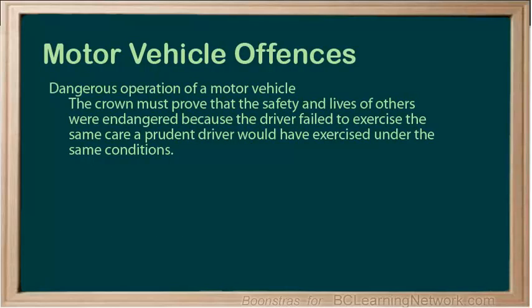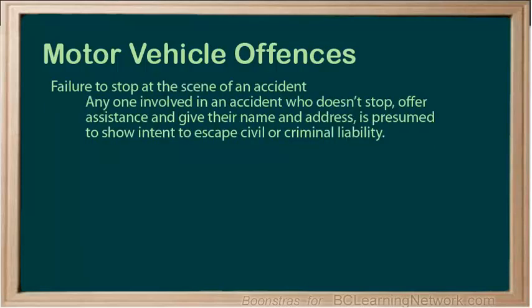There are a variety of motor vehicle offences. One is dangerous operation of a motor vehicle — the Crown must prove that the safety and lives of others were endangered because the driver failed to exercise the same care a prudent driver would have under the same conditions. This is a hybrid offence. Another is failure to stop at the scene of an accident — anyone involved in an accident who doesn't stop, offer assistance, or give their name and address is presumed to show intent to escape civil or criminal liability. This is commonly known as a hit and run and is a hybrid offence.